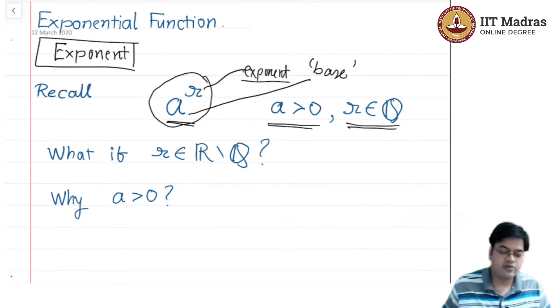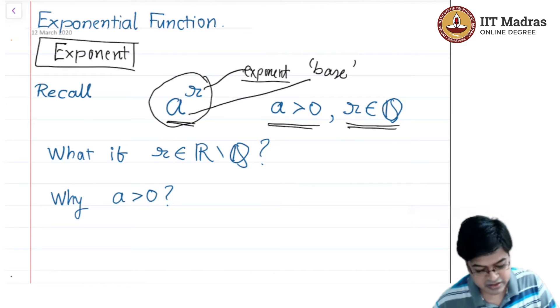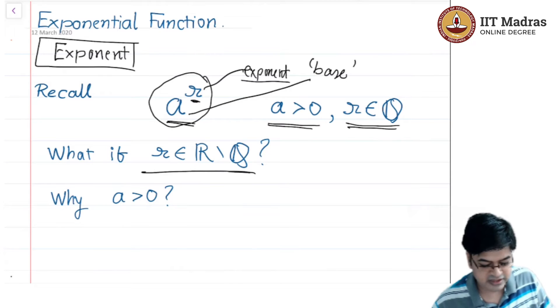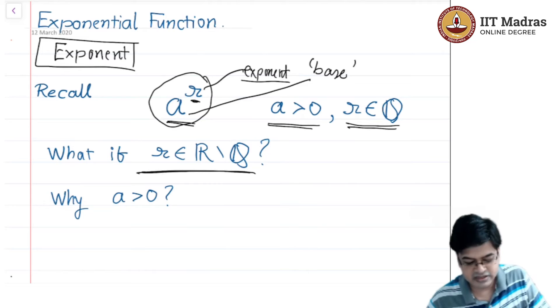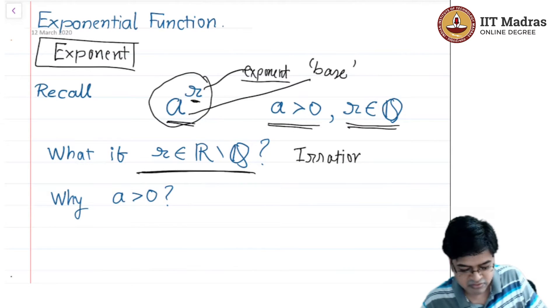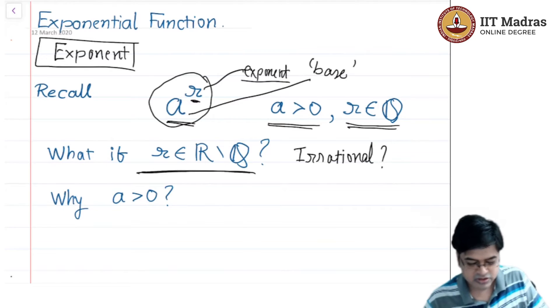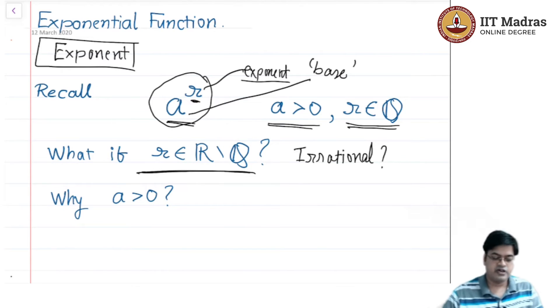Now, if I want to define exponential functions on the real line, then it is mandatory for me to define a raised to r for r's that do not belong to the set of rational numbers. This is the real line minus the set of rational numbers, that is, I am talking about the set of irrational numbers.